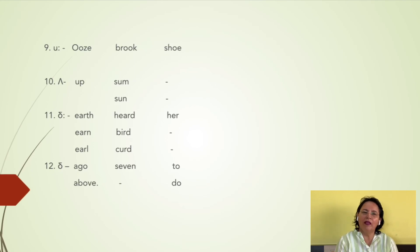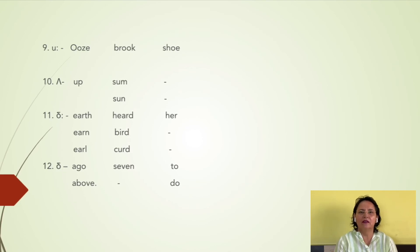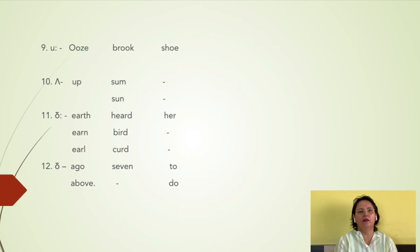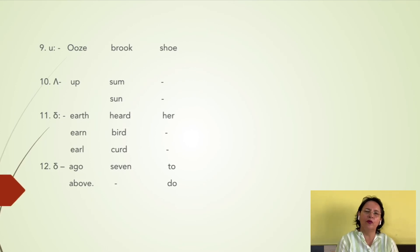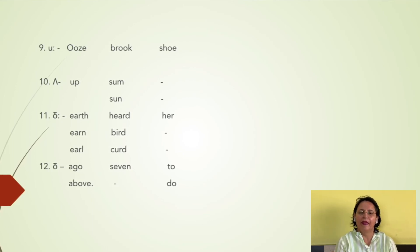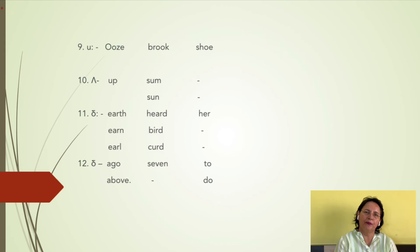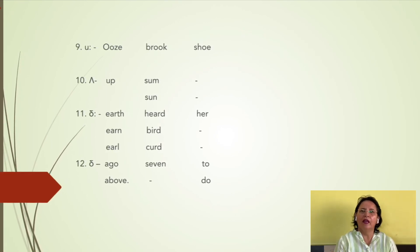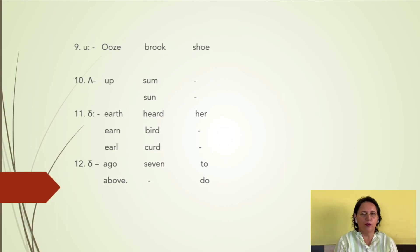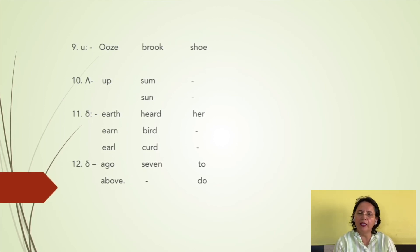Coming to vowel number eleven, /ɜː/, which is a long sound. You have it in 'earth', 'earn', 'earl' at the initial position; 'birth', 'heard', 'curt' in the medial position; and 'her' in the final position. In this case, again, you will find that it stands midway between half-open and half-close, and is a central vowel — an example of a neutral vowel, because the lips are undisturbed and not put into any shape.